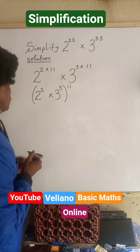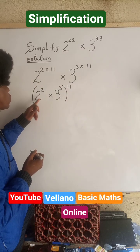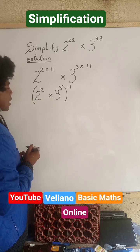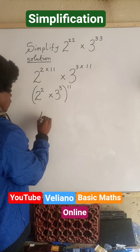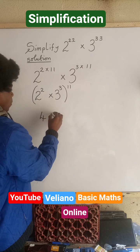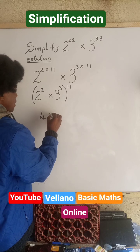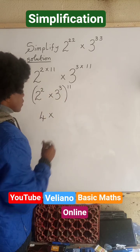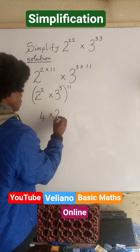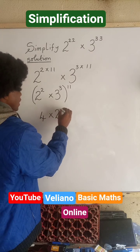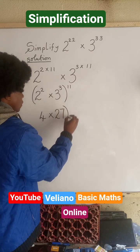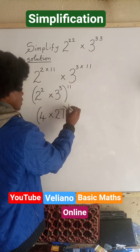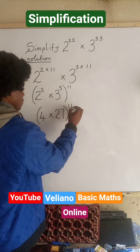You see what I did now? This 2 power 2 means 2 times 2, which will give us 4. Multiplied by 3 power 3, meaning 3 times 3 times 3, which is 27. So we now have 4 multiplied by 27, all in brackets, raised to power 11.